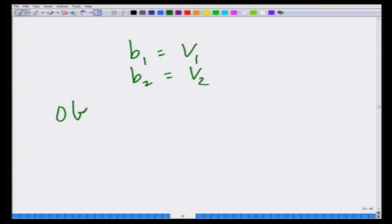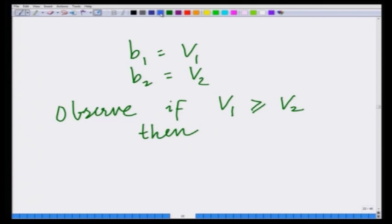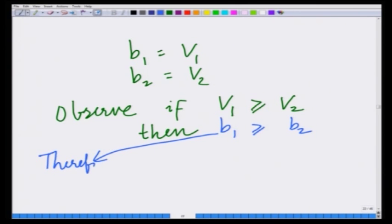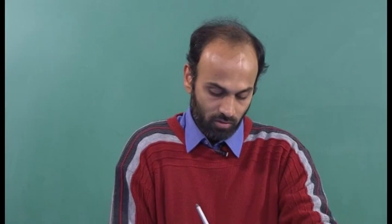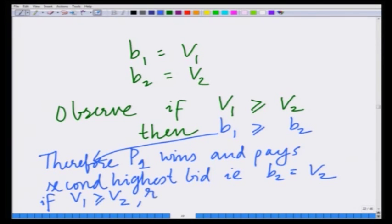Now observe: if v1 is greater than or equal to v2, then since B1 equals v1 and B2 equals v2, we have B1 greater than or equal to B2. Therefore, player 1 wins and pays the second highest bid. So player 1 wins and pays the second highest bid, that is B2 equals v2. Therefore, if v1 is greater than or equal to v2, revenue to the auctioneer equals v2.